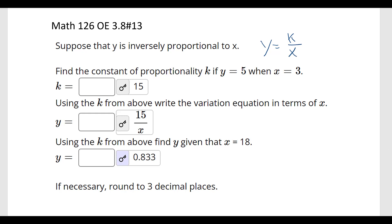It says find the constant of proportionality k if y equals 5 when x is 3. So that means 5 equals k over 3. We multiply by 3, and then k equals 15.